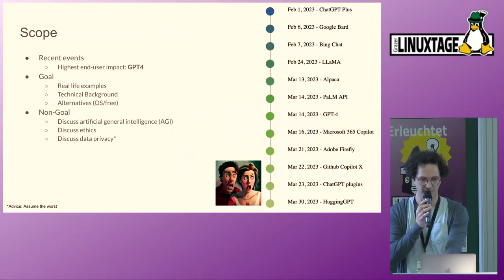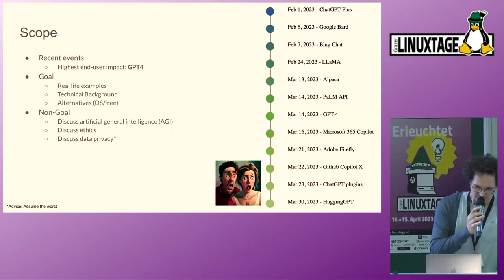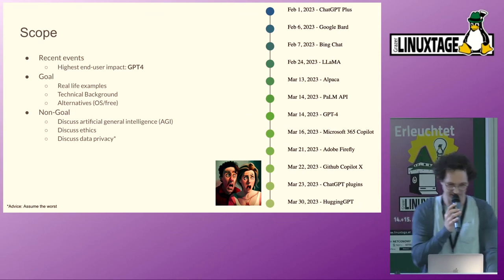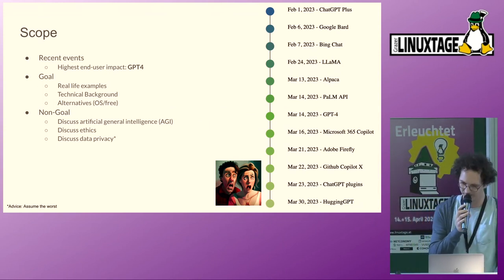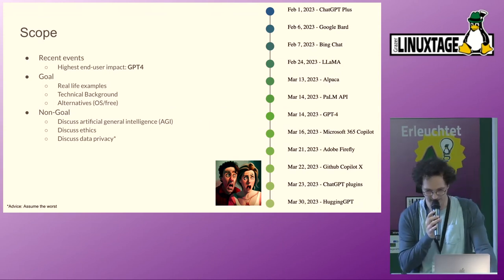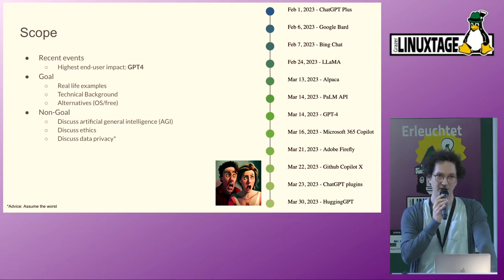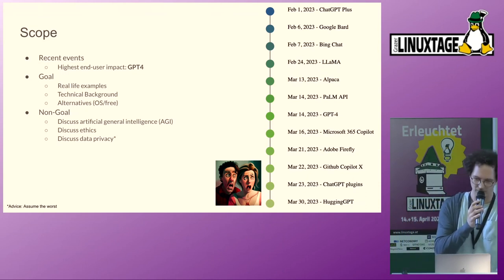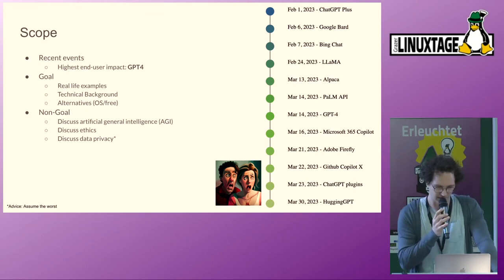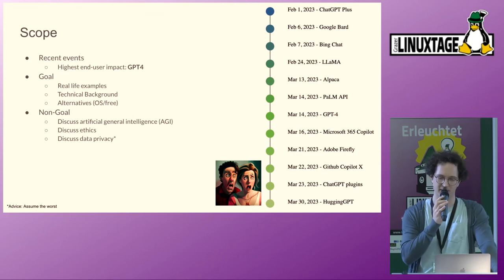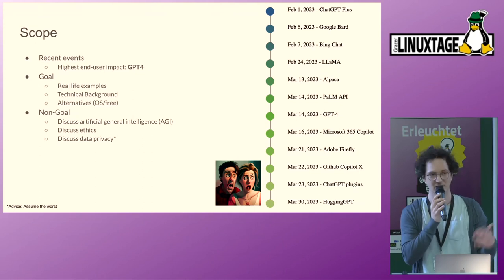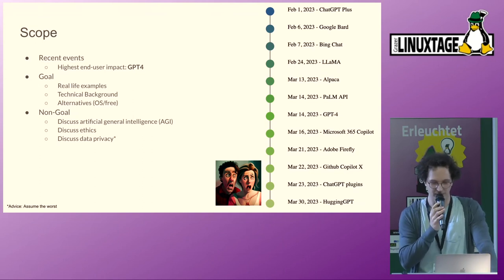Some more words about the scope. Since two months ago when we submitted this talk, basically every other day there was an announcement about some new AI tool. So we really had to restructure a few times about what we want to focus on. What we came away with is that what we think has the highest end-user impact is really GPT-4, the model used in the ChatGPT tool. That's going to be a big part of today's presentation.